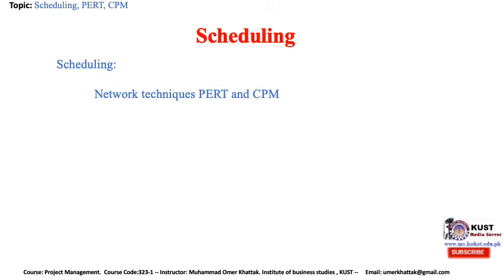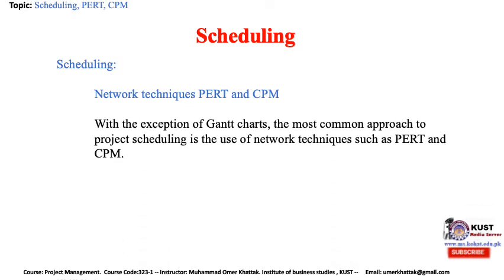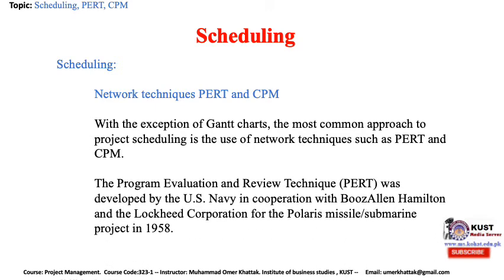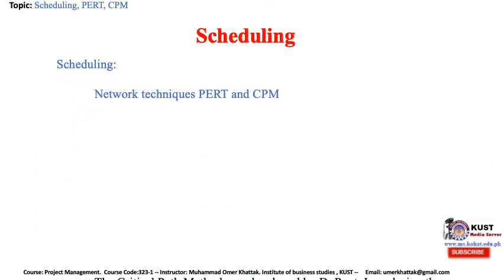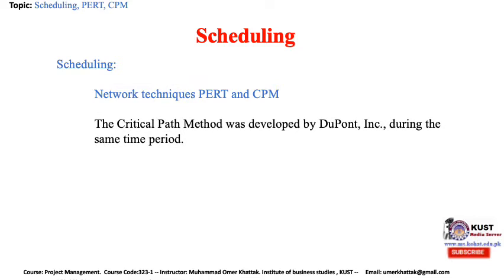Network techniques: PERT and CPM. PERT is Project Evaluation and Review Technique and CPM is Critical Path Method. With the exception of Gantt Charts, the most common approach to project scheduling is the use of network techniques such as PERT and CPM. PERT was developed by the U.S. Navy in cooperation with Bruce Allen Hamilton and the Lockheed Corporation for the Polaris missile submarine project in 1958. The Critical Path Method was developed by DuPont Incorporated during the same time period.